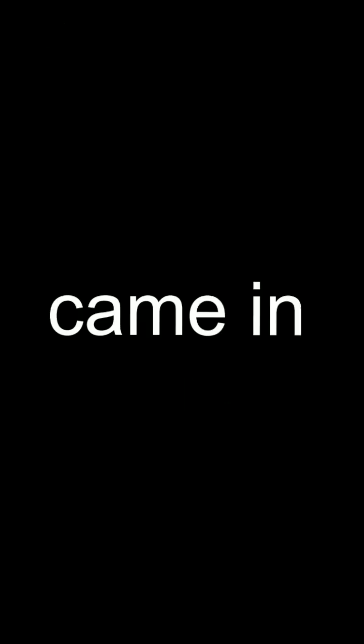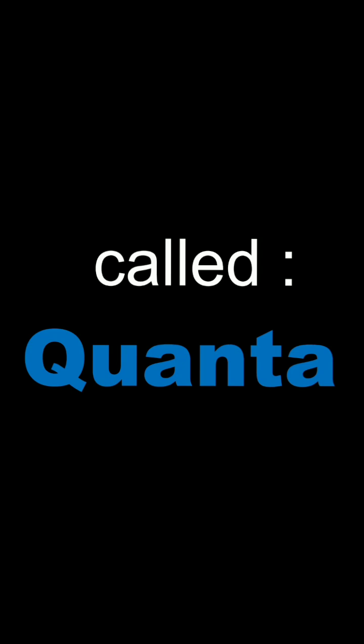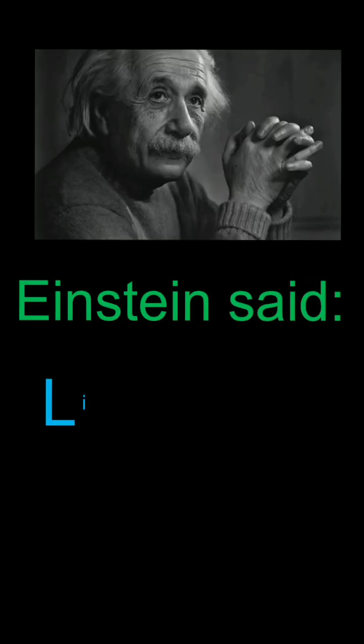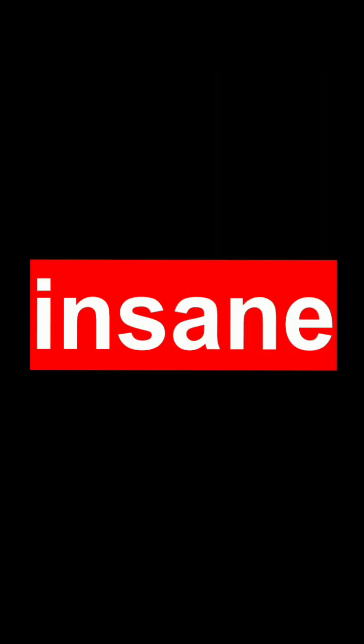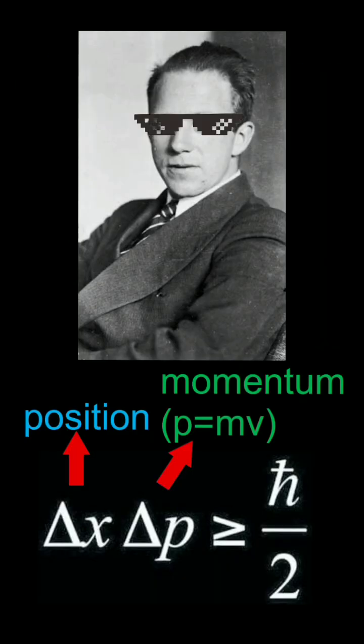Then tiny problems started breaking the old rules. Max Planck noticed that energy came in tiny packets called quanta. Einstein said light itself acted like a particle, a photon. And Heisenberg discovered something insane: you can never know a particle's exact position and speed at the same time.